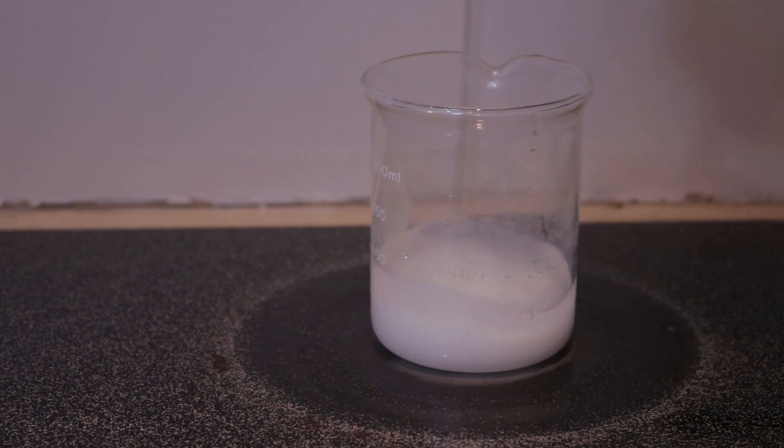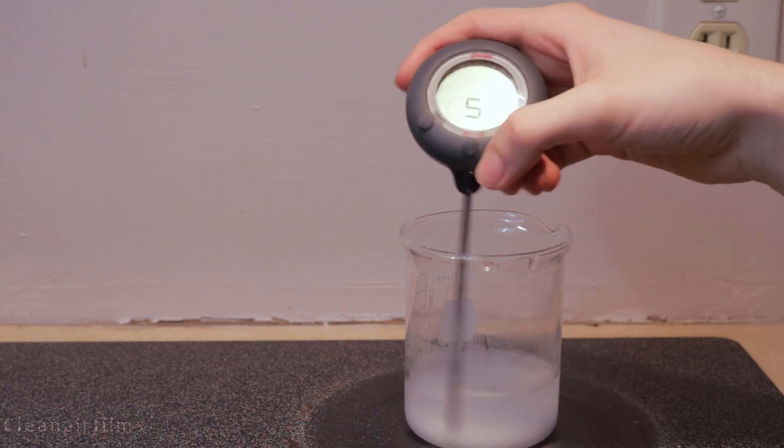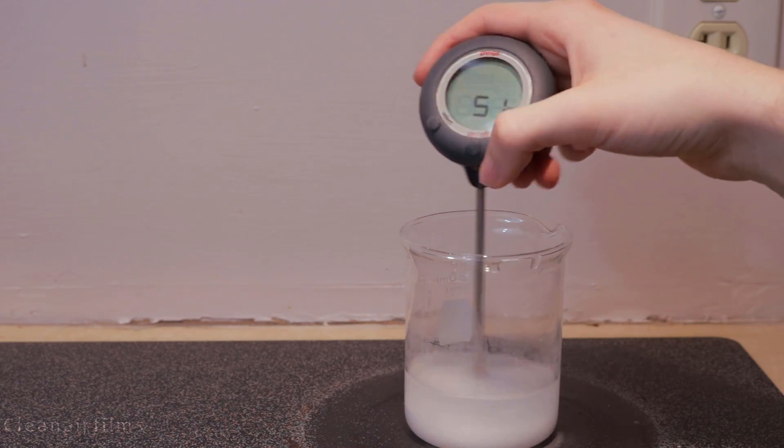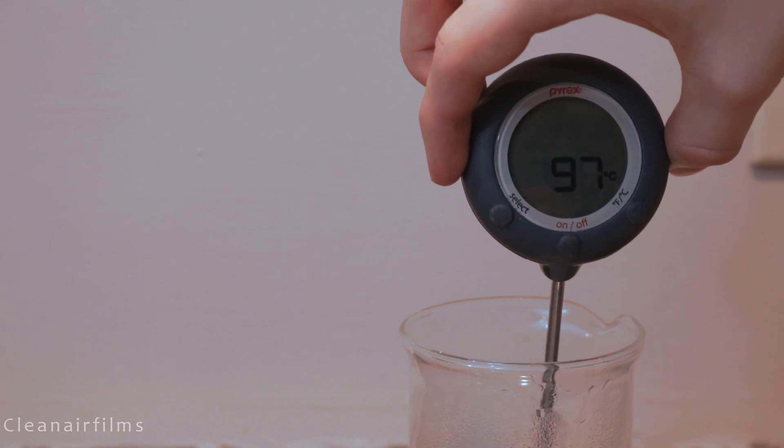Stir the salt and water and turn on the heat. Use a thermometer to stir the solution and monitor the temperature. Heat the water to 95 degrees Celsius stirring continuously.